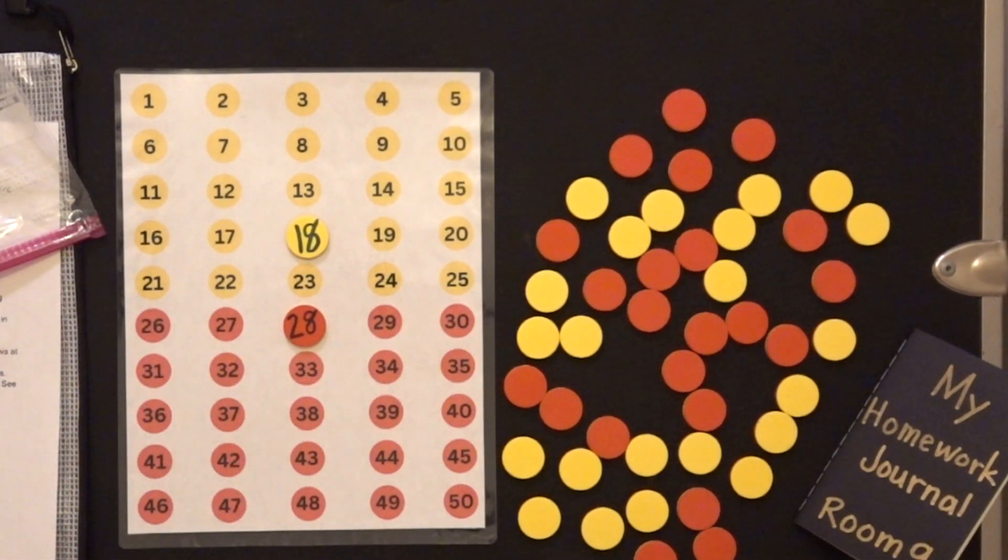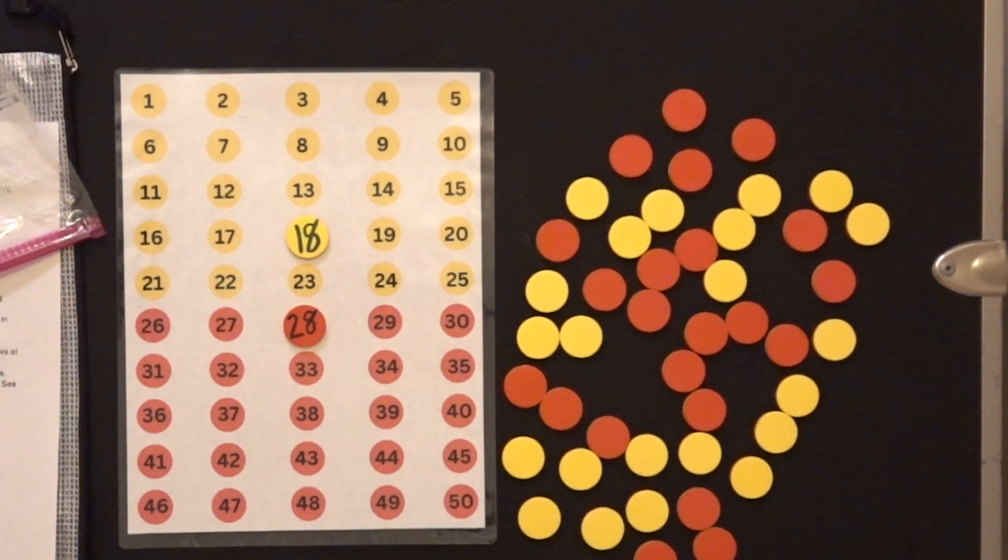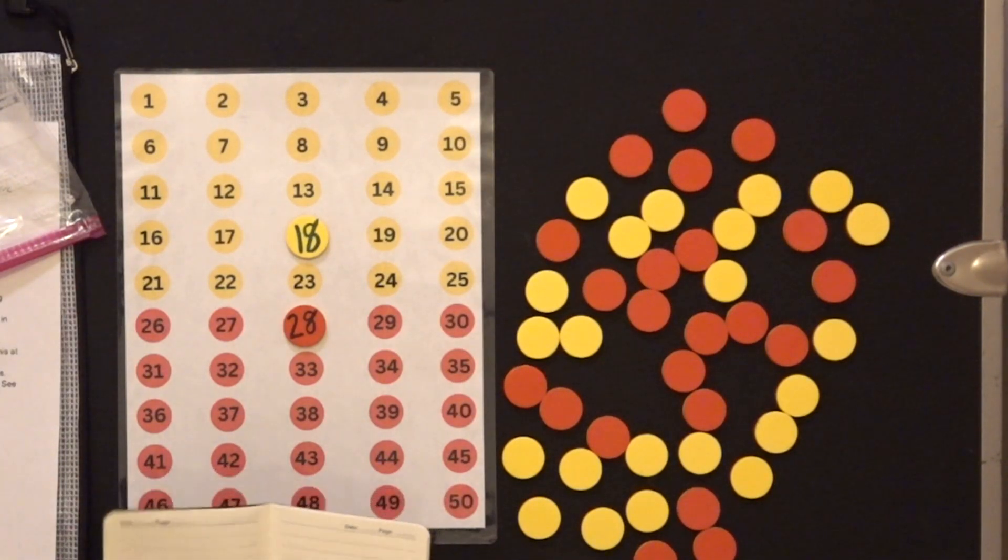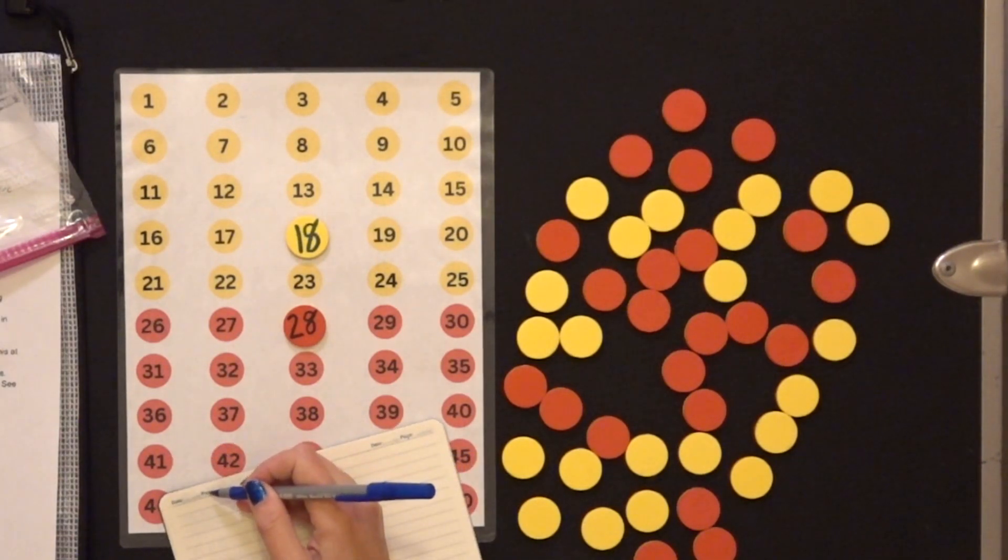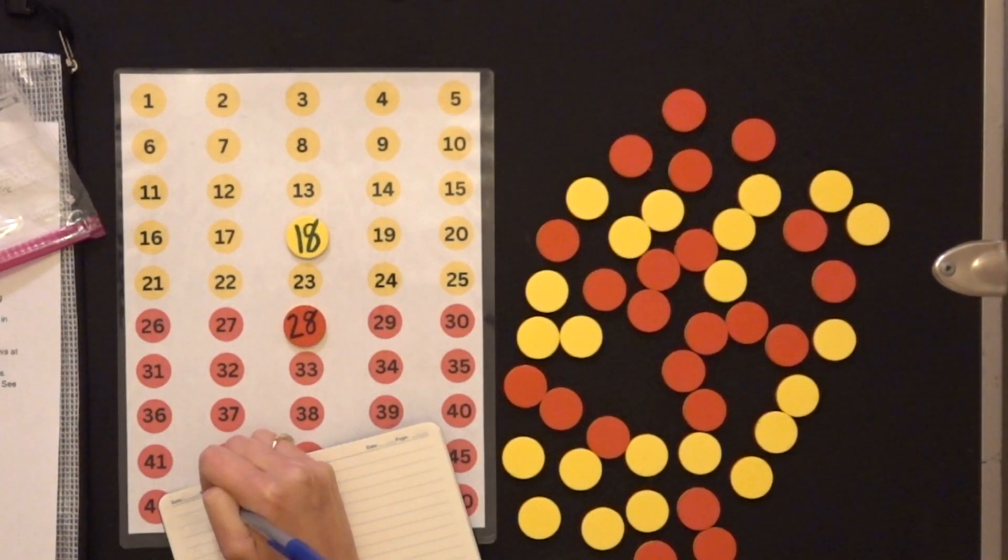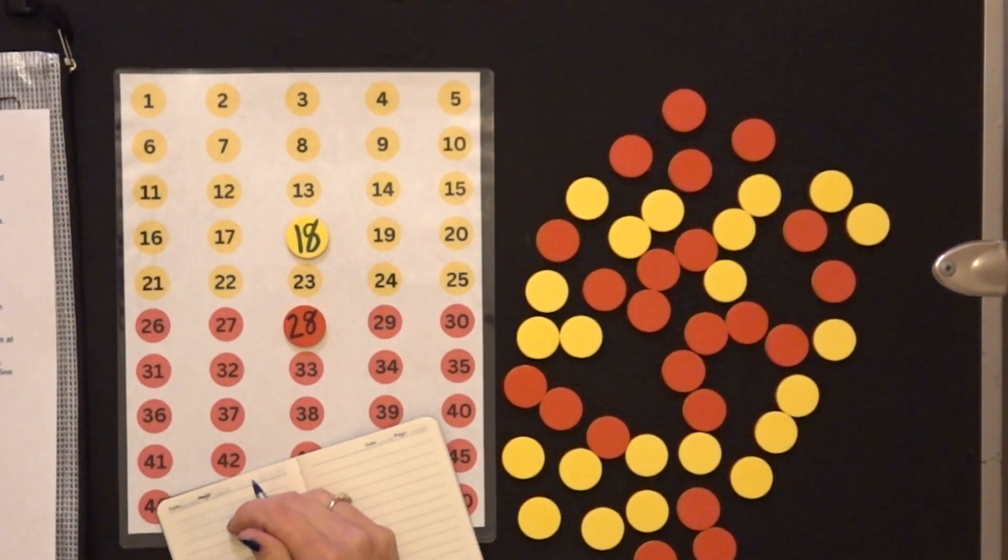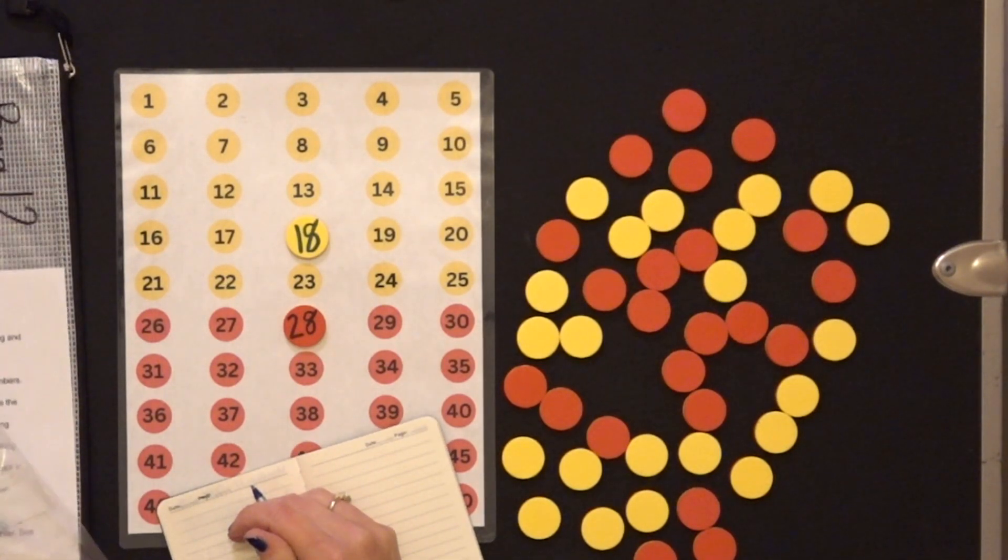And then every day in your homework journal, you need to record one of those sets. So you get to your next available page. And remember, instead of page, we do not write page, we write our bag number. So this is bag number 12.